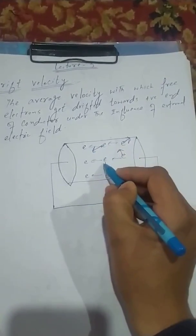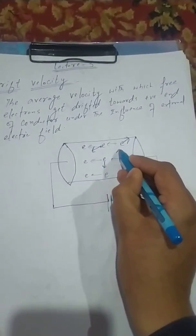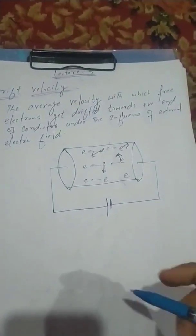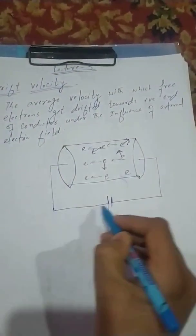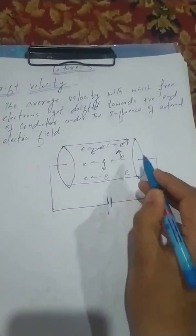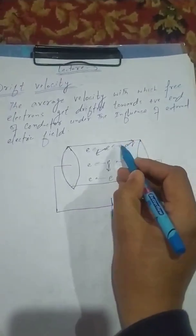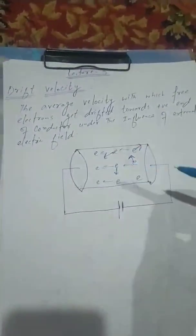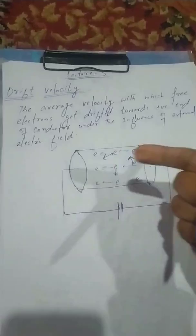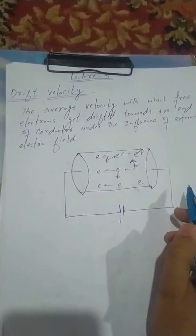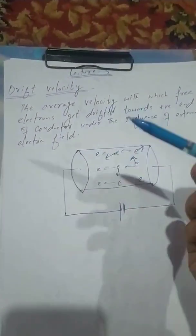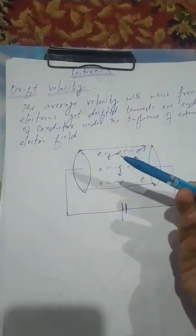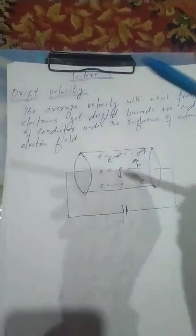Their average value of the velocities initially is taken to be zero because they are moving randomly in different directions. But when we apply a potential difference across the ends of the conductor, these electrons which were moving randomly start moving towards the positive terminal of the battery. The velocity of these electrons is variable, and the average value of this velocity is called the drift velocity.